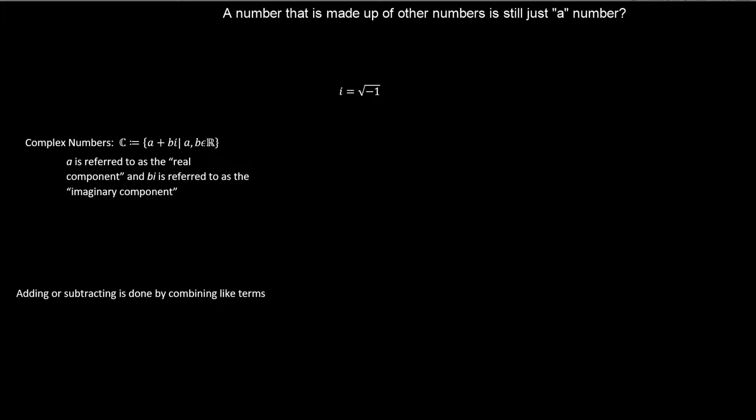Some of you were probably given this example of, well, it's a solution to x squared plus 1 equals 0. Because you have to find something that when you square it, you get negative 1. And while that's true, it wasn't really how it came about originally.